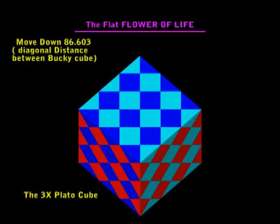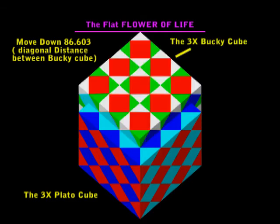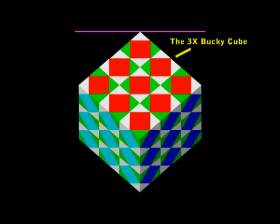Now we'll drop down this Plato 3x 86.603 and we'll bring in a 3x Bucky cube arrangement. The Bucky and the Plato cubes are like dueling cubes. Universities haven't showed any interest in this, but I have shown that this gives us perfect DNA geometry.